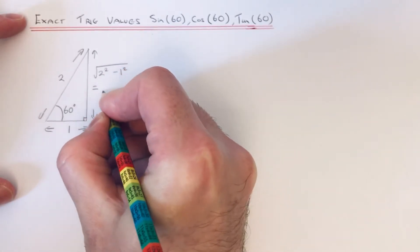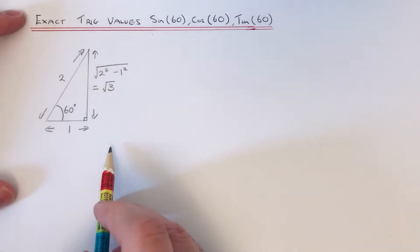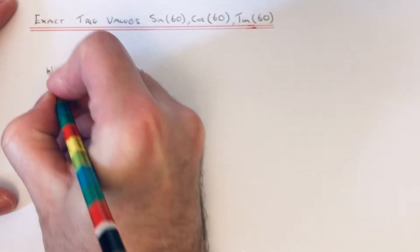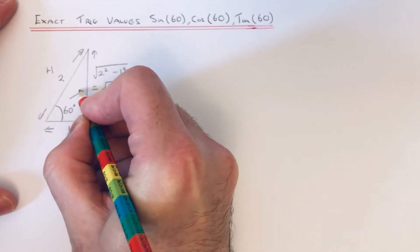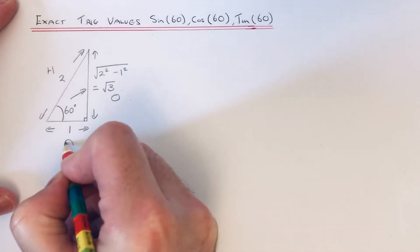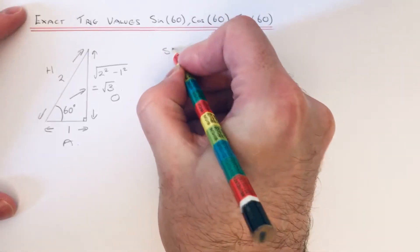If we label up our triangle then, the two is the hypotenuse, root 3 is the opposite side, and the third side is the adjacent. So let's write our values down then.